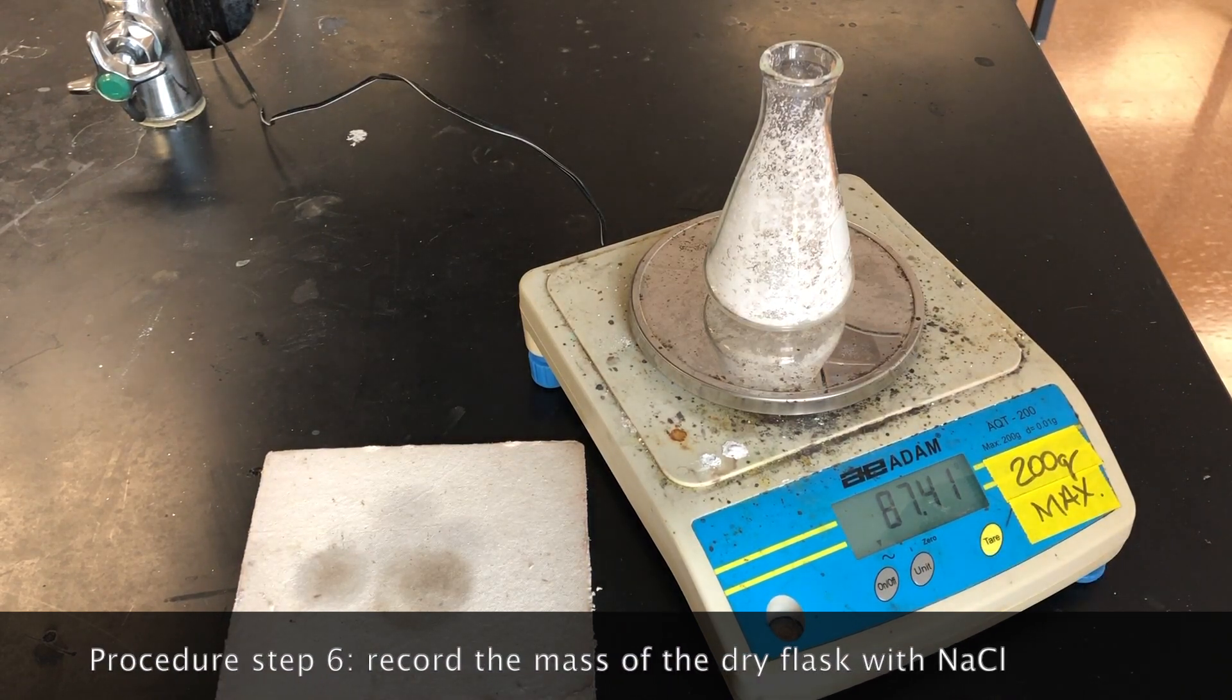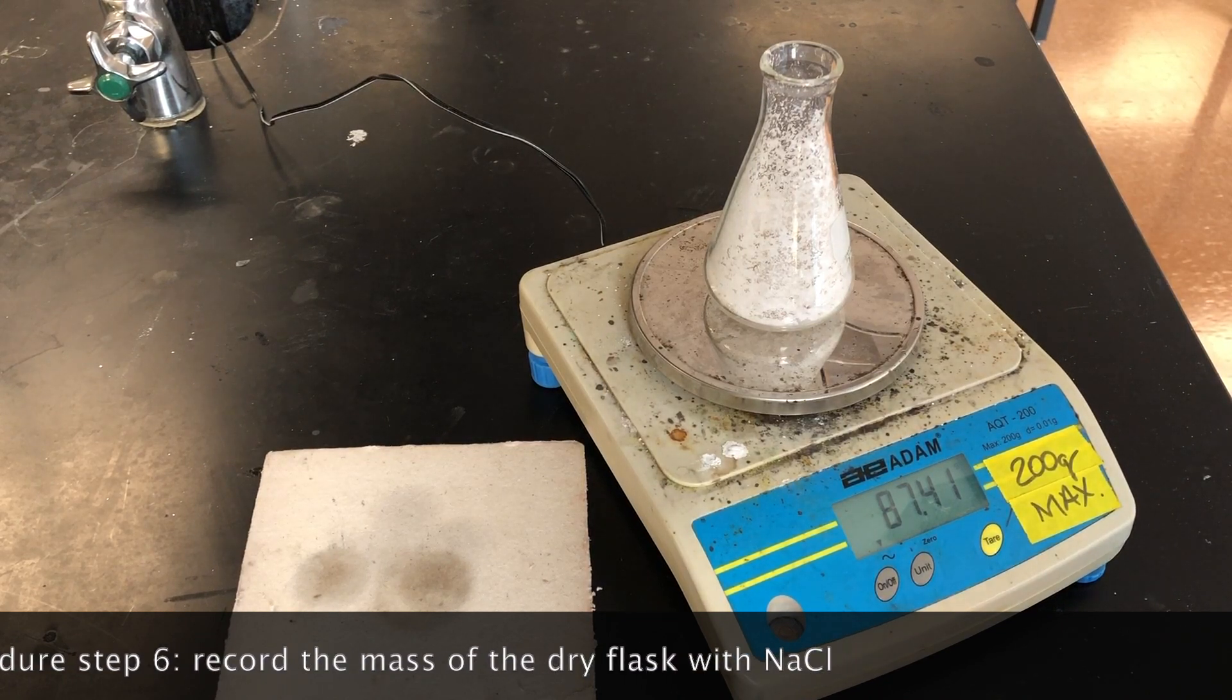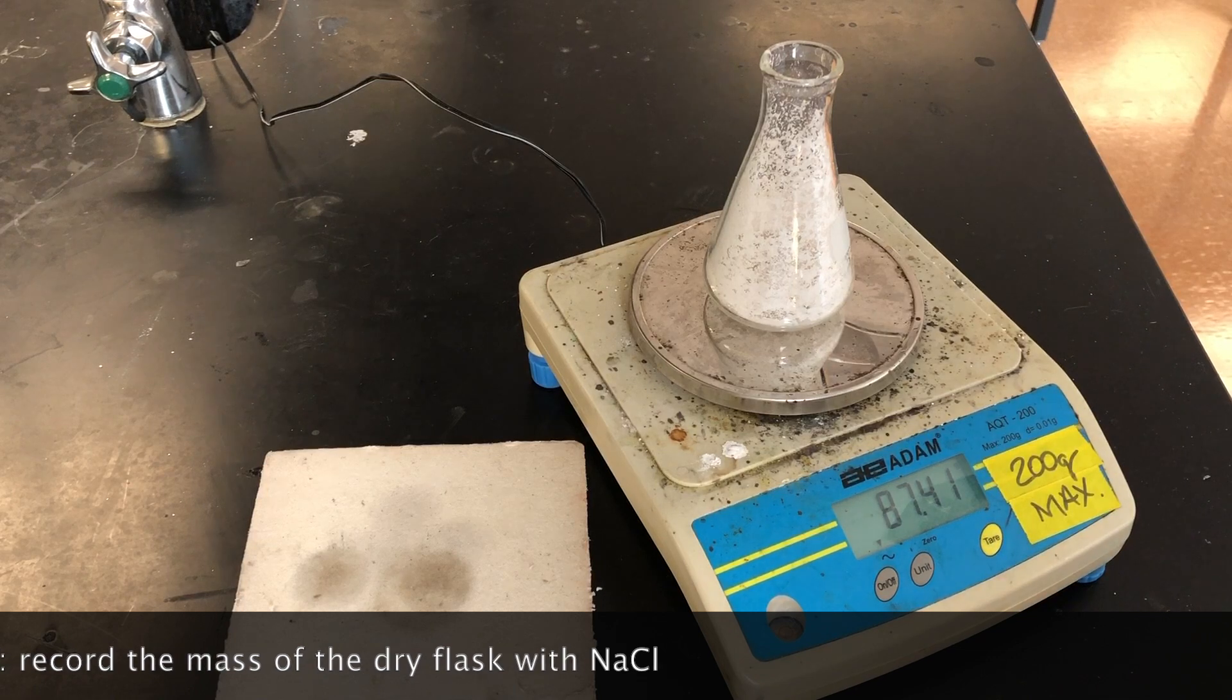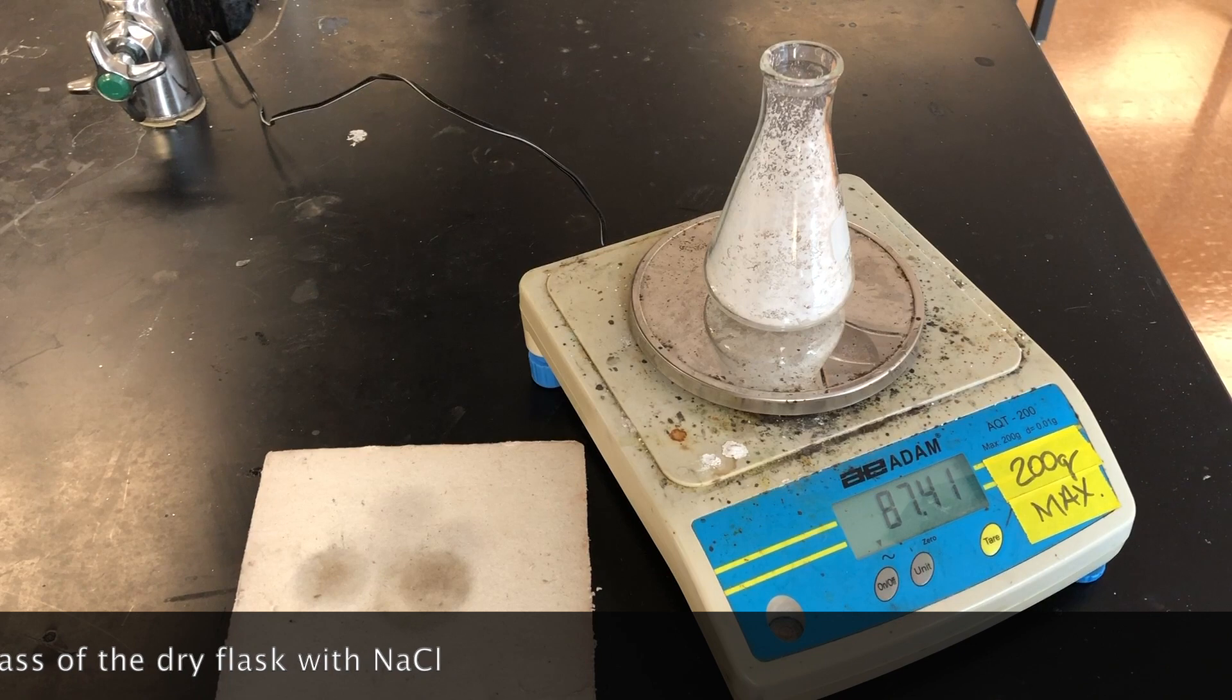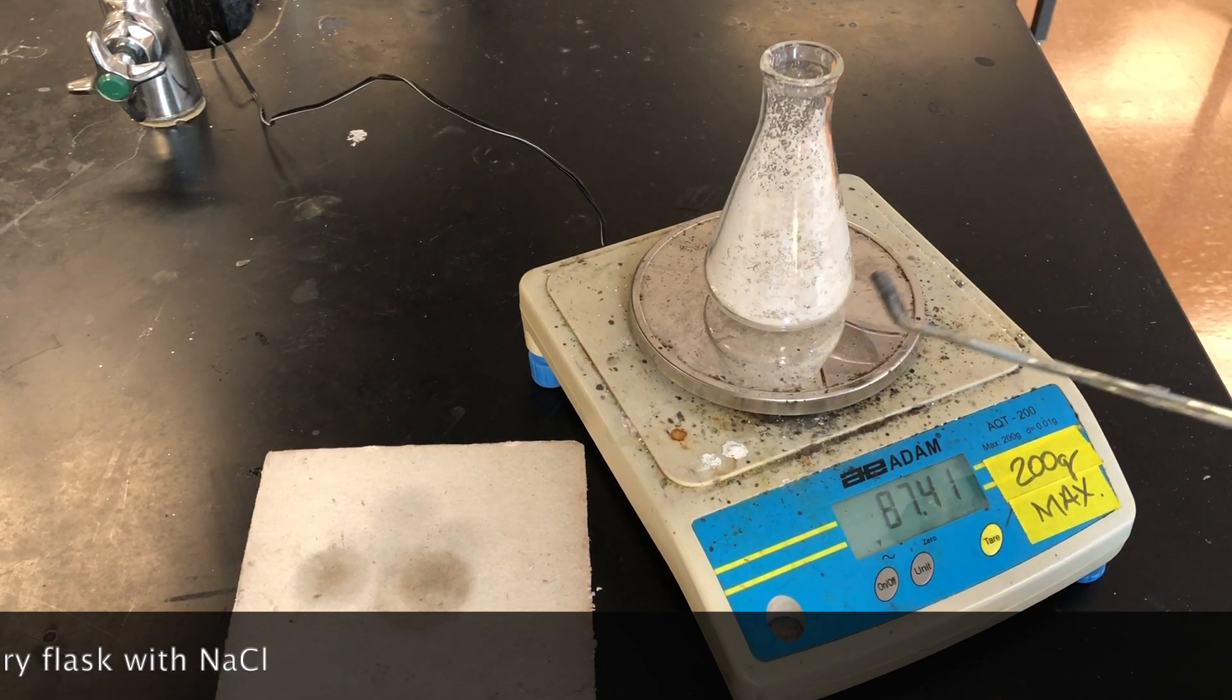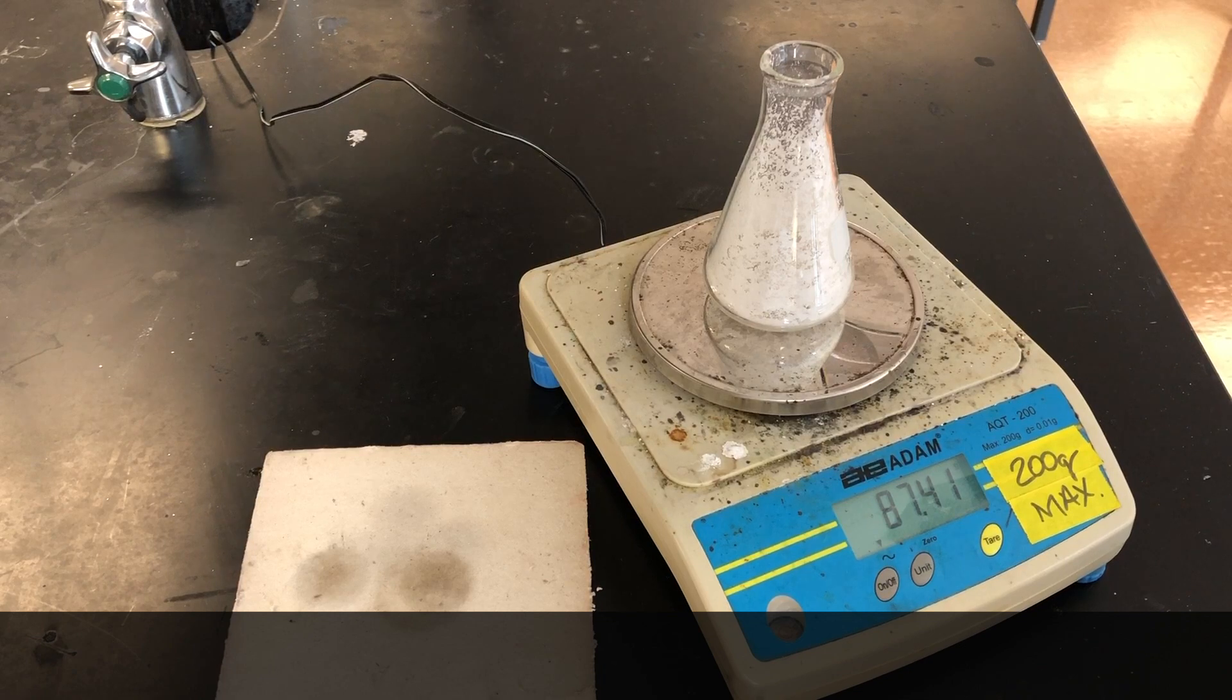We can take the measurement of the Erlenmeyer flask and the sodium chloride that is left in it. We have a value of 87.41 grams. 87.41 grams. You can see that it was quite useful to find the mass of the Erlenmeyer at the beginning, before we started this reaction, because there would be no way now to measure the mass of the sodium chloride produced any other way.